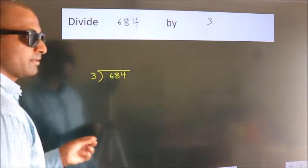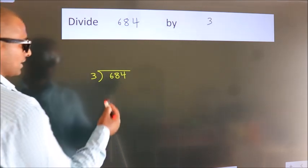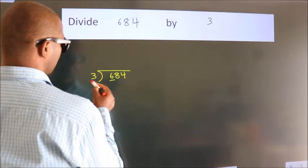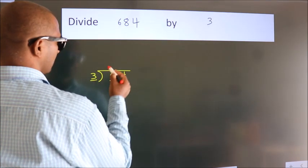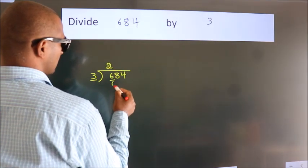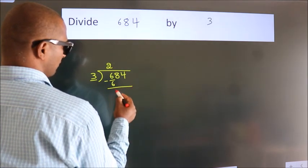This is your step 1. Next, here we have 6, here 3. When do we get 6? In 3 table, 3 2s, 6. Now, we should subtract, we get 0.